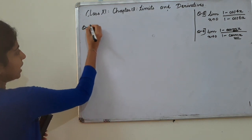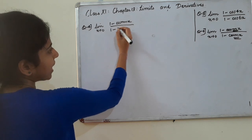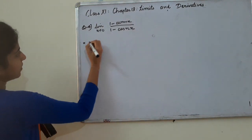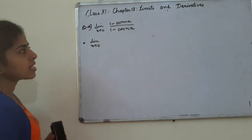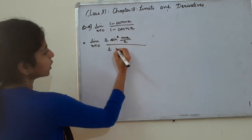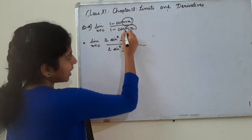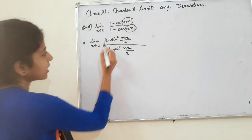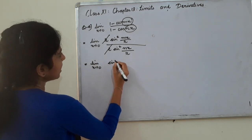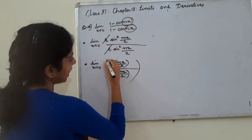Question 4: x tending to 0, 1 minus cos mx divided by 1 minus cos nx. Applying the identity, numerator becomes 2 sin square of mx by 2, and denominator becomes 2 sin square of nx by 2. The angle considered is half — mx by 2 and nx by 2.